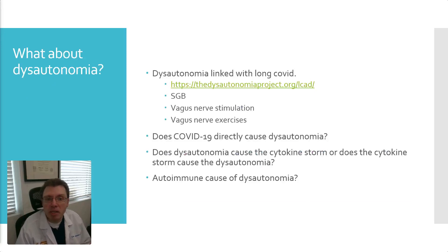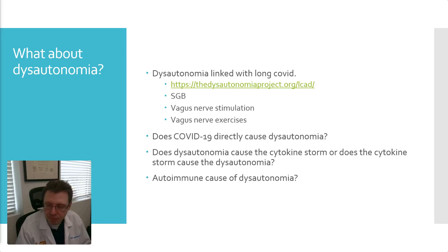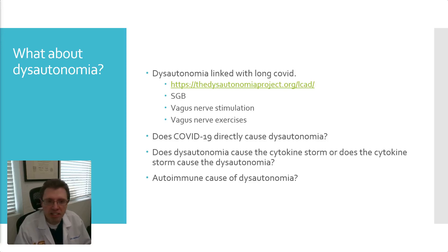What about dysautonomia? That's kind of a fifth hypothesis. There is a large website dedicated specifically to dysautonomia linked to long COVID — I listed it right there. As you know, I'm a big proponent of the stellate ganglion block, doing the dual block at C4 and at C6 for the injection. Also, the vagus nerve stimulation using the TENS unit, and of course the vagus nerve-based exercises.